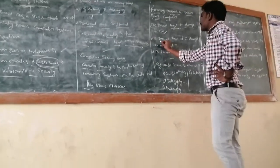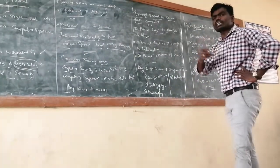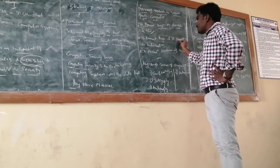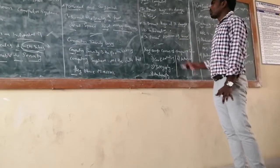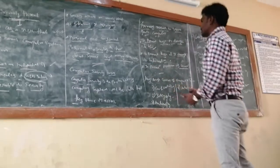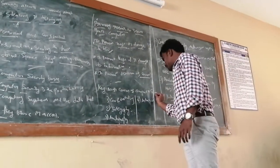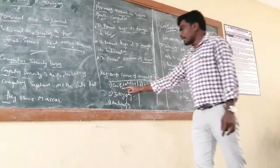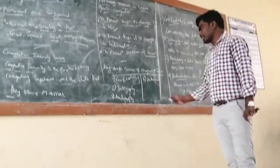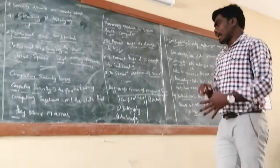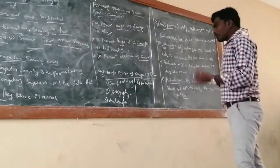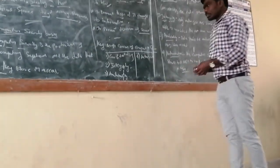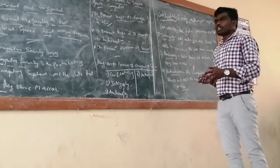And the next one is to prevent the damage to the personal information - that is the primary goal. Now, what are the key accesses? We have four key accesses in computer security. The first one is confidentiality. What is confidentiality?